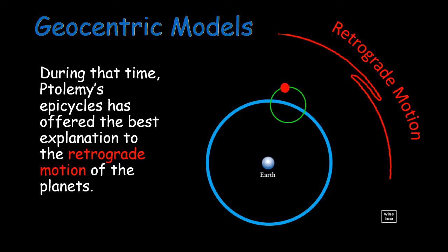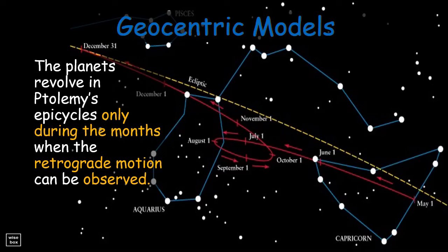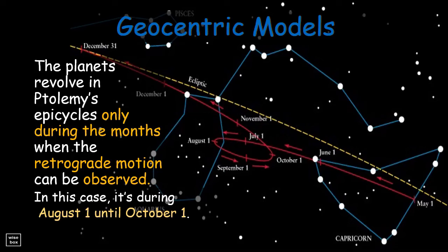The planets revolve in Ptolemy's epicycles only during the months when the retrograde motion can be observed. In this case, it's during August 1st until October 1st.